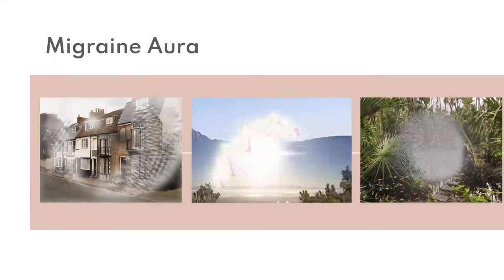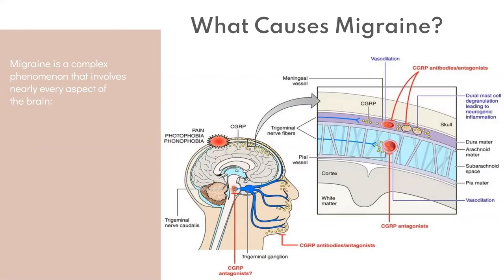These are some visualizations of what migraine aura may look like — the zigzag lines, the colors, the area of blurred vision in the middle of your visual field. So what causes this entire process? This picture shows a lot of very complicated things. In general, migraine is a complex phenomenon that definitely affects every part of the brain — sensation, the blood vessels of the brain, and inflammation around the brain.